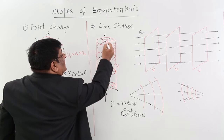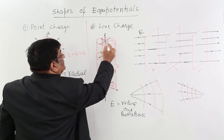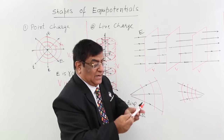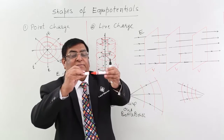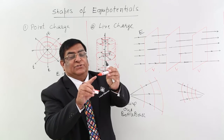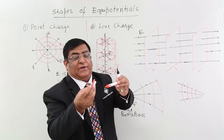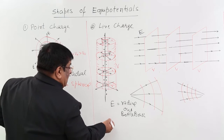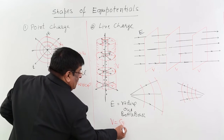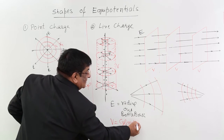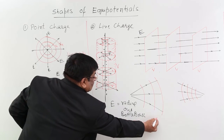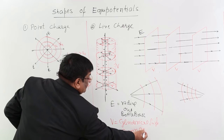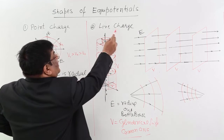Similarly, for a smaller R, we can draw another equipotential surface. There will be many equipotential surfaces, one above the other. If this is a charged line, then this is one equipotential surface, this is another equipotential surface. All these cylinders are equipotential surfaces — cylindrical surfaces with a common axis. This is the case for line charge.